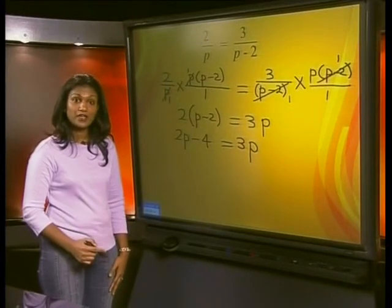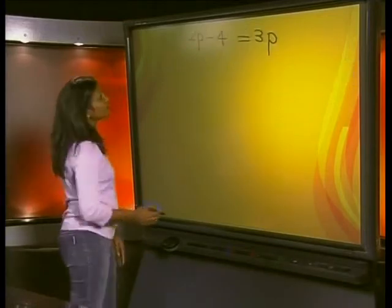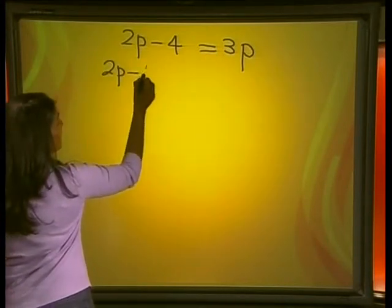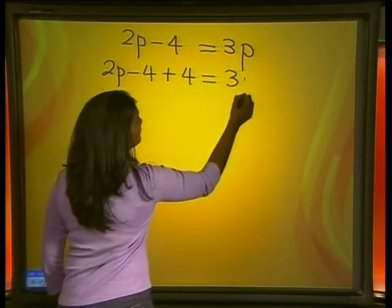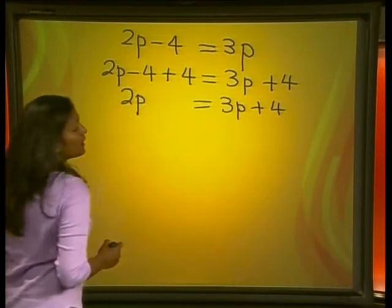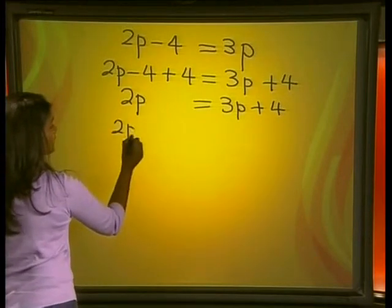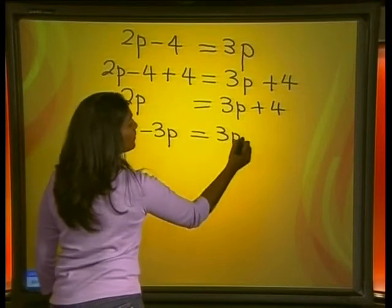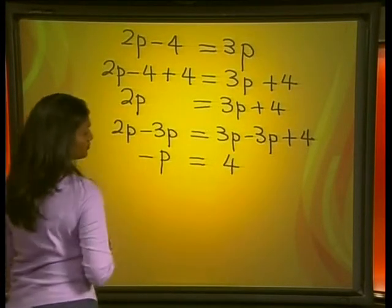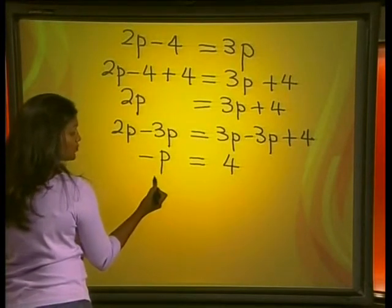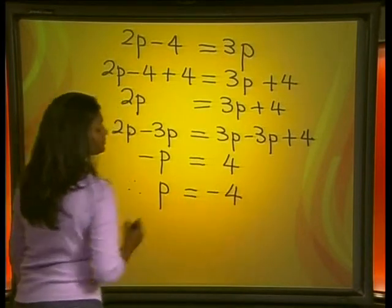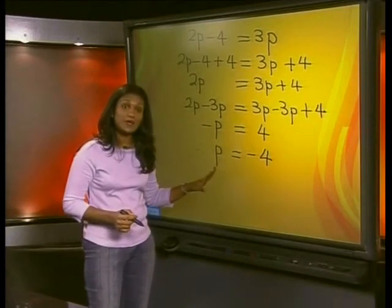Now we can solve for P, keeping the equation in balance. We have 2P minus 4 equals 3P. Adding 4 to both sides: 2P equals 3P plus 4. Subtracting 3P from both sides: minus P equals 4. Dividing by negative 1 on both sides gives us P equals negative 4.